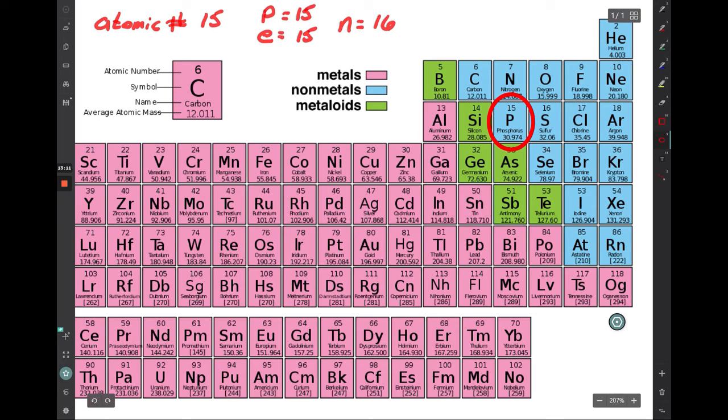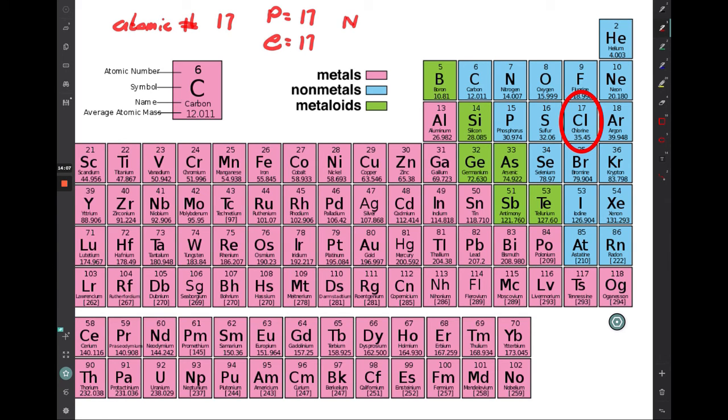While I am erasing this, why don't you do chlorine? Come up with the atomic number, the number of protons, the number of electrons, and the number of neutrons, for chlorine. The atomic number is 17. Therefore, there are 17 protons, 17 electrons. Calculate the number of neutrons. So it would be 35 minus 17 would be 18.